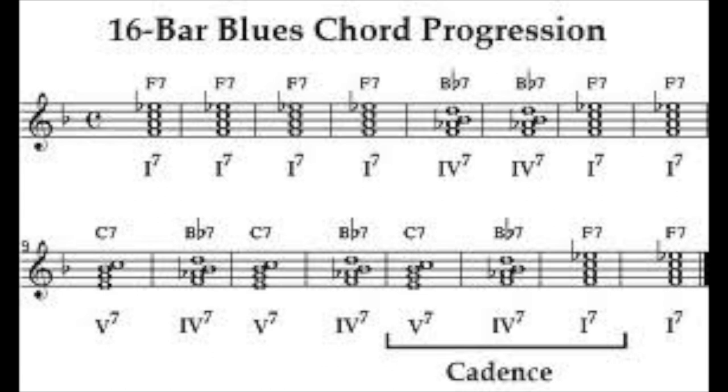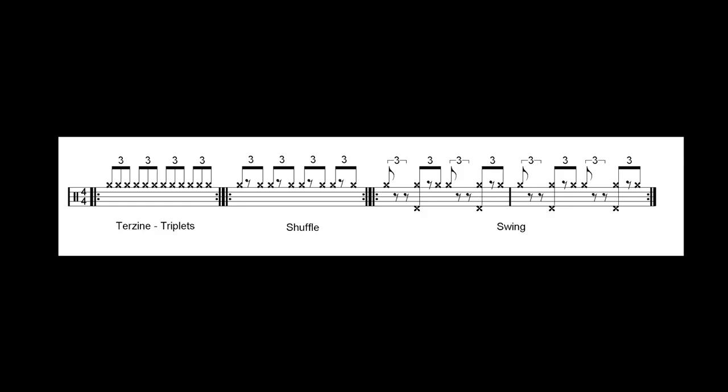From a drummer's point of view, technically speaking, the basic drum accompaniment is built around three different ternary rhythms: triplet, shuffle and swing. The tricky part is to lend solidity and feeling to the groove.